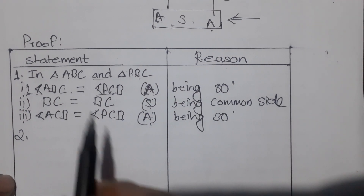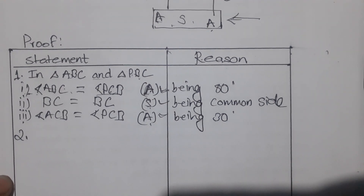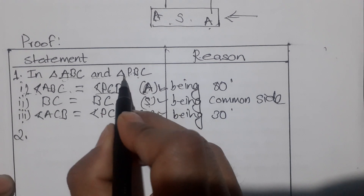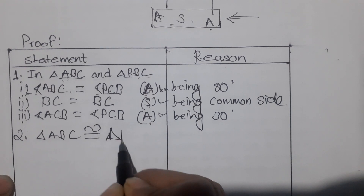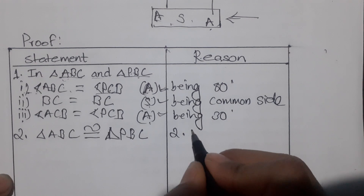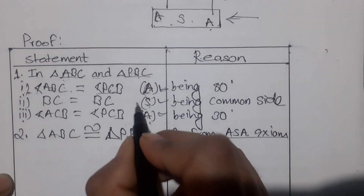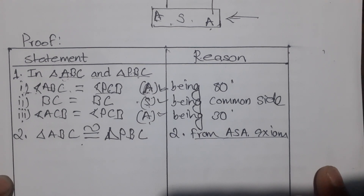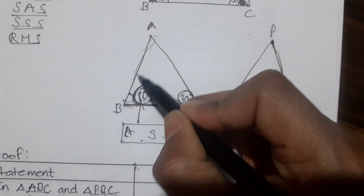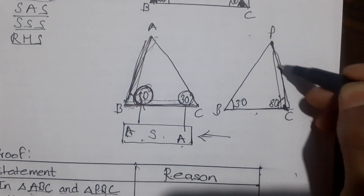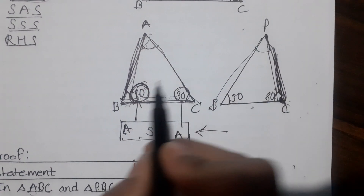Similarly, number 2 is the next step to pass. You can log in from ASA. So here is the congruence criterion applied. When you sign in the application, you can see A.B corresponding side P.C. Similarly, A.C corresponding side P.B. You can see A.B in equal balance.